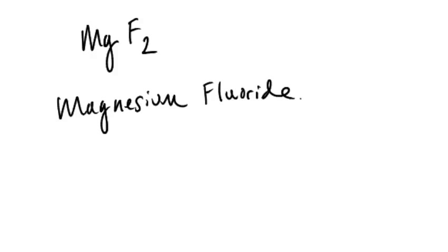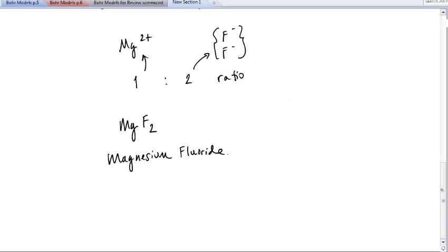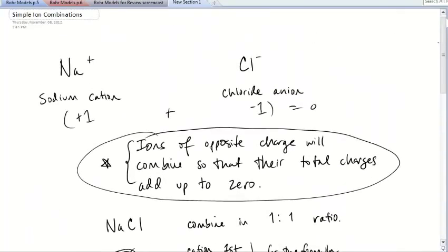That's a couple of examples of how to do really simple ion combinations. That's all for now, folks. Thanks.